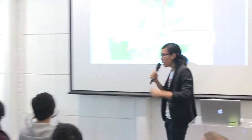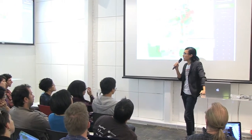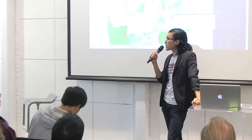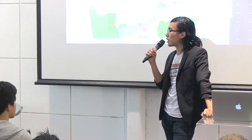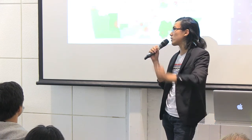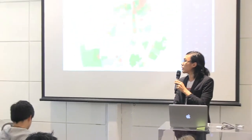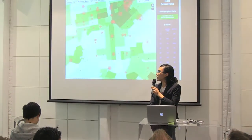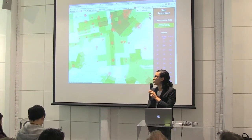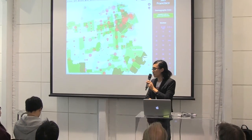Question: How did you choose which stops to include on the map? Basically, I used whatever was in the dataset. Some stops may be very small and barely visible, but they're still there. I wasn't doing any deliberate picking and choosing when it came to stops — I just used what was in the data.